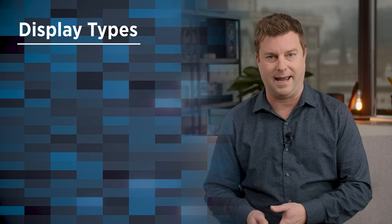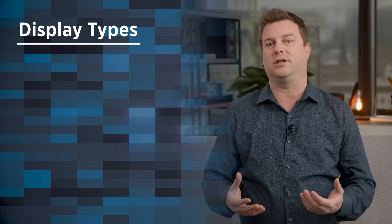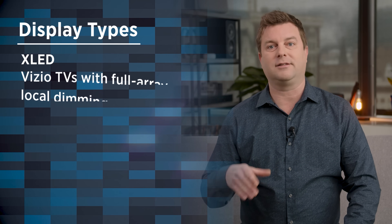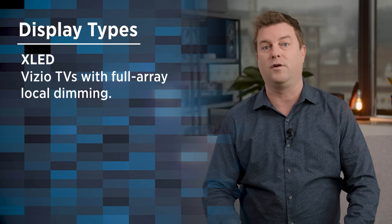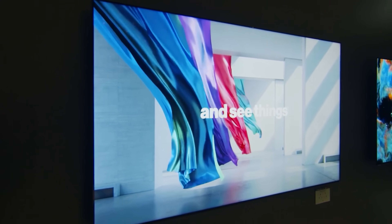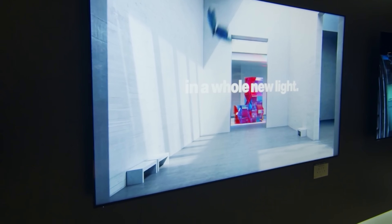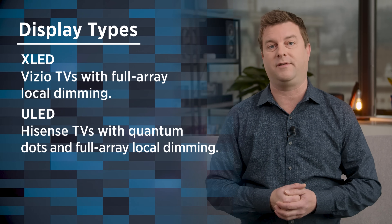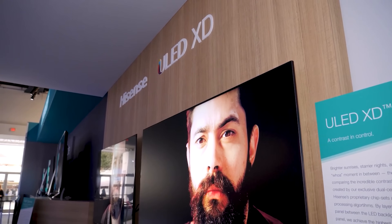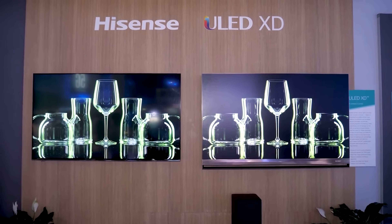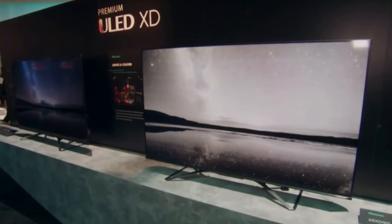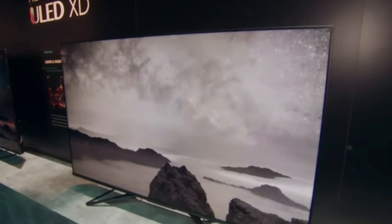Now we're going to take a step away from legit TV types and move into marketing land. The following TV acronyms are really just badges for TV brands to help set themselves apart. The first is XLED — a term Vizio uses to badge its LED TVs with full-array local dimming. Then there's ULED, which is what Hisense uses to describe their TVs with quantum dots and full-array local dimming. They could have just called them QLED, but this is their premium brand and they want to stand out. Hisense does have a cool dual-layer LCD technology that fits under ULED, but doesn't really define it.